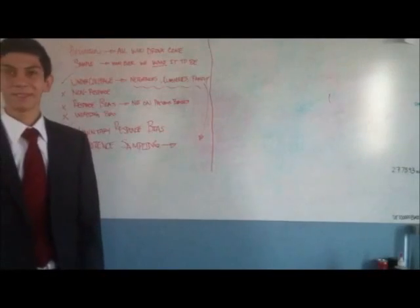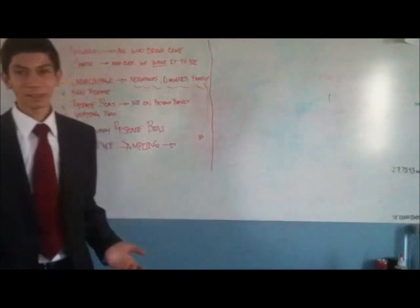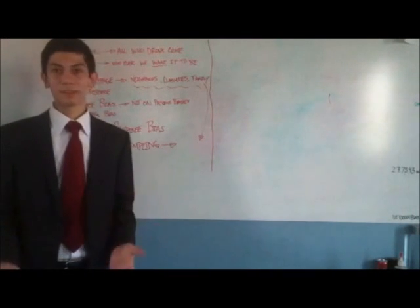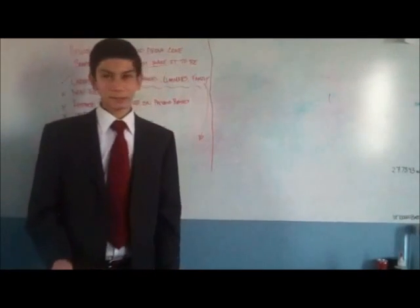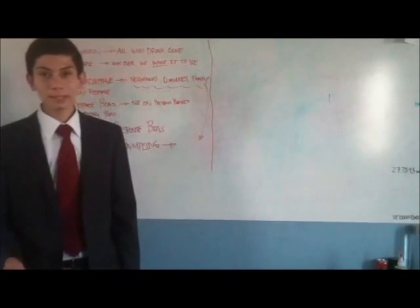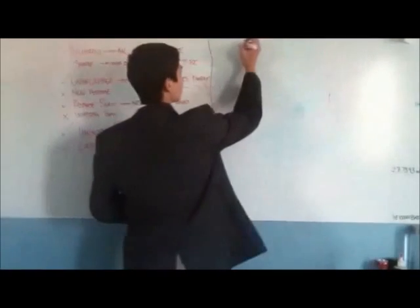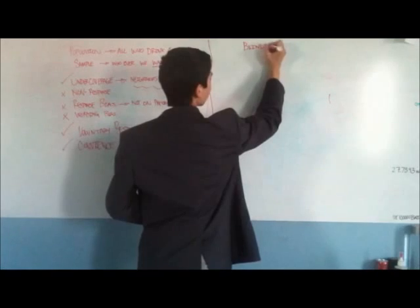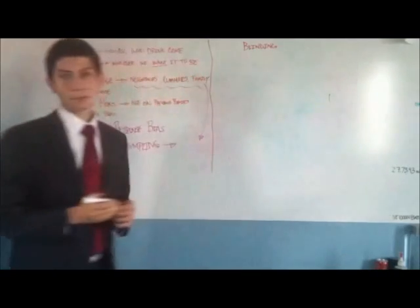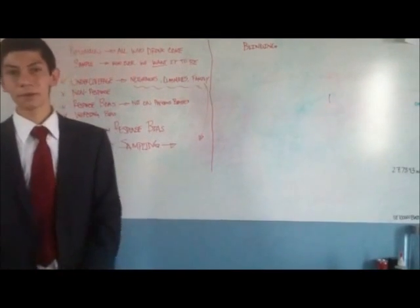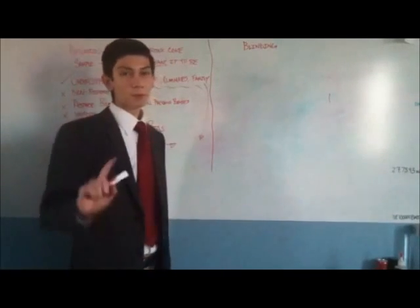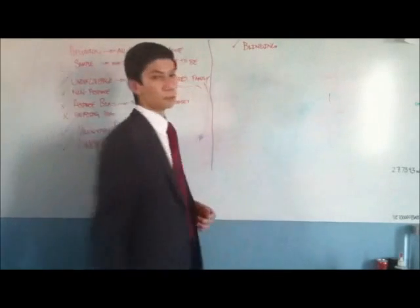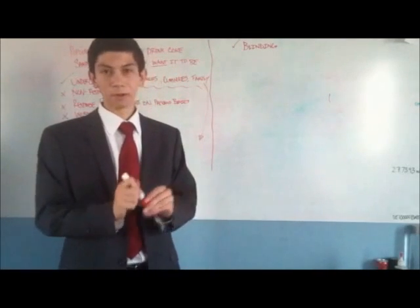The next thing we have to talk about is blinding. We had to do blinding in our test because if we didn't, then people might draw on their previous knowledge of their preferences — Mexican Coke versus American Coke — to respond to our survey. We didn't want that to happen. So we used blinding, and it helps make our survey more reliable.